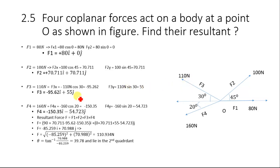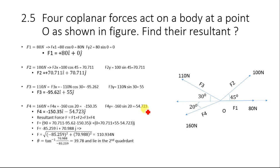Force F4 is 160 newtons and acts in the third quadrant, where both cosine and sine are negative. The x-component is −160 cos 20° = −150.35 newtons, and the y-component is −160 sin 20° = −54.723 newtons. So F4 = −150.35i − 54.723j.